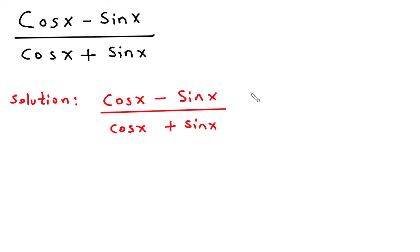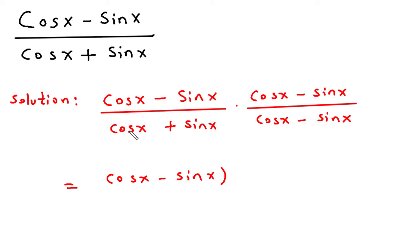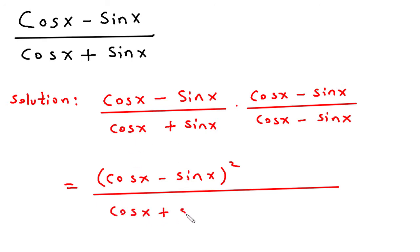Now we can multiply the numerator and denominator by cos x minus sin x. To handle the denominator, we divide by cos x minus sin x. This gives us cos x minus sin x whole square in the numerator, divided by cos x plus sin x into cos x minus sin x.